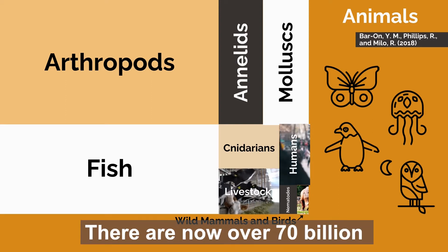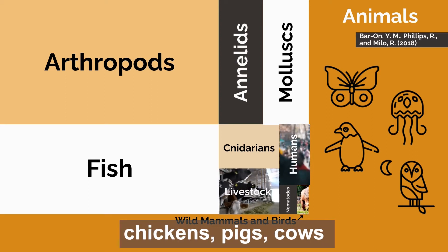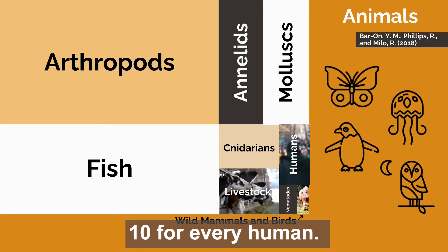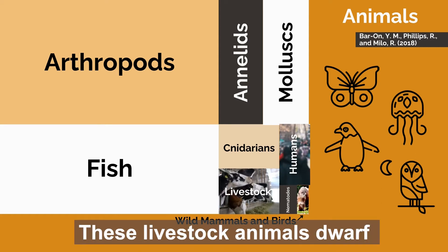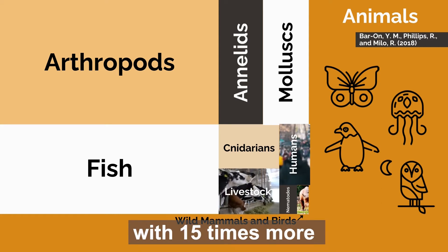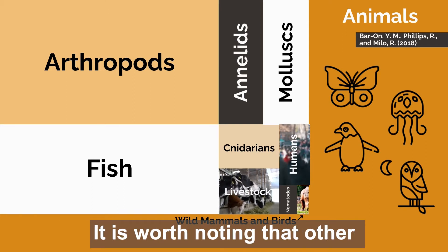There are now over 70 billion chickens, pigs, cows and sheep on earth, around 10 for every human. These livestock animals dwarf the wild population, with 15 times more captive mammals than wild ones.